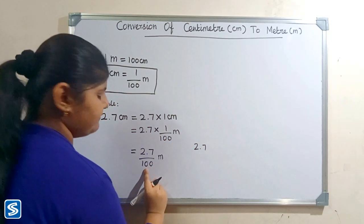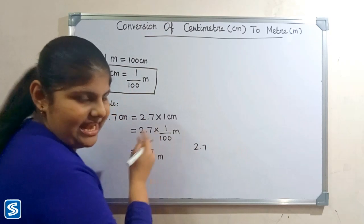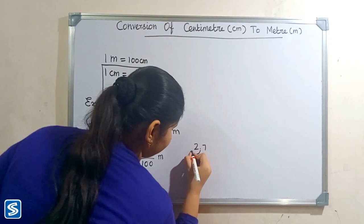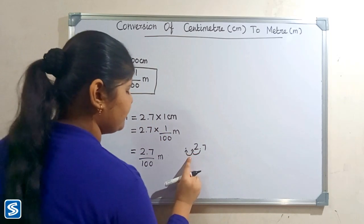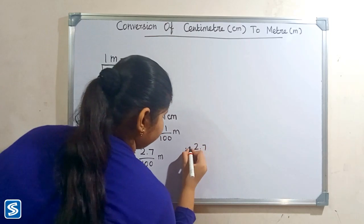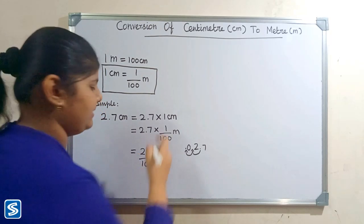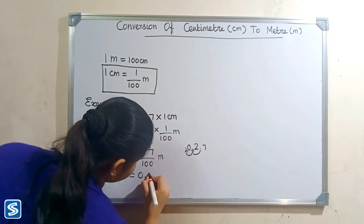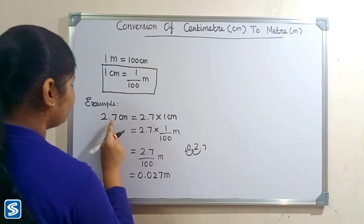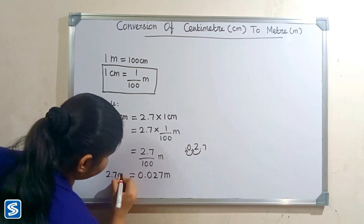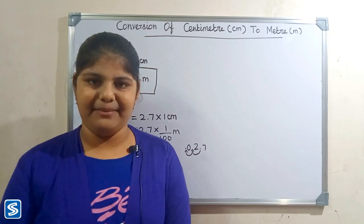The easy way to divide by one hundred is to move the decimal point two places to the left. We fill zeros in the empty spaces. So when we divide 2.7 by 100 meters, our answer will be 0.027 meters. So 2.7 centimeters is equal to 0.027 meters.